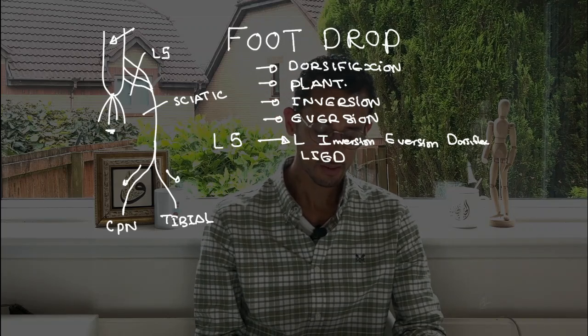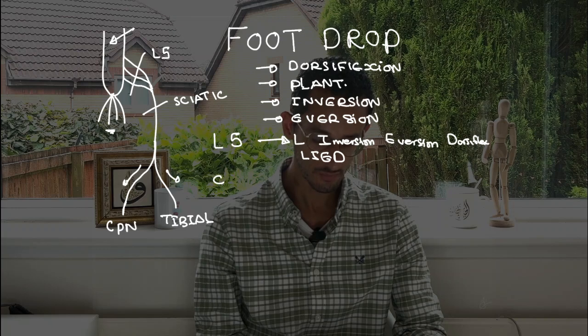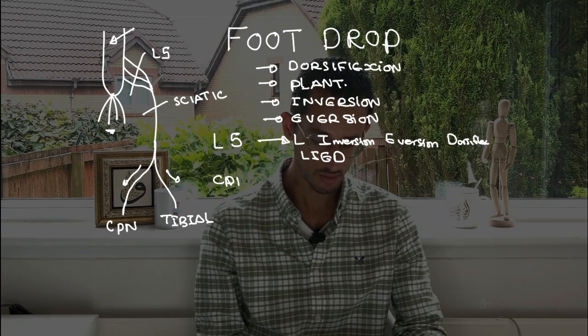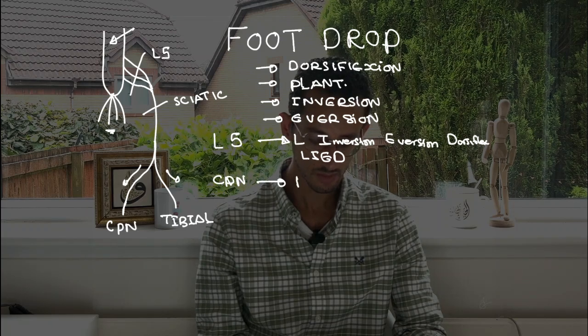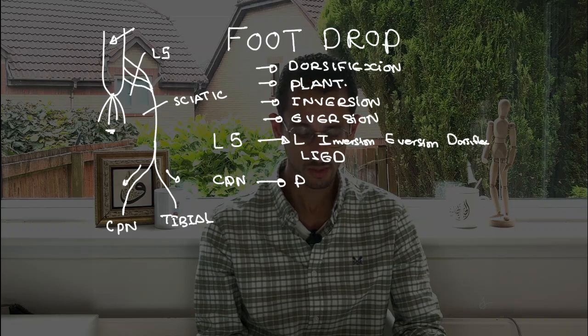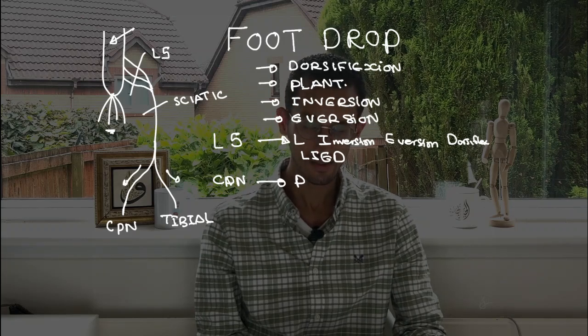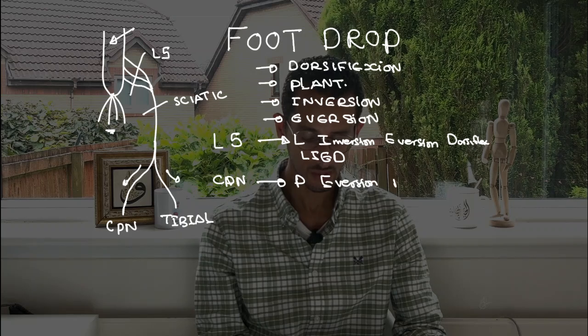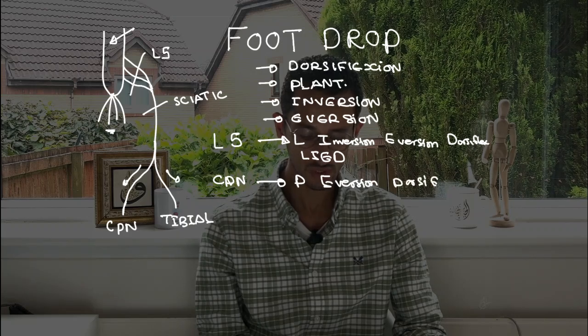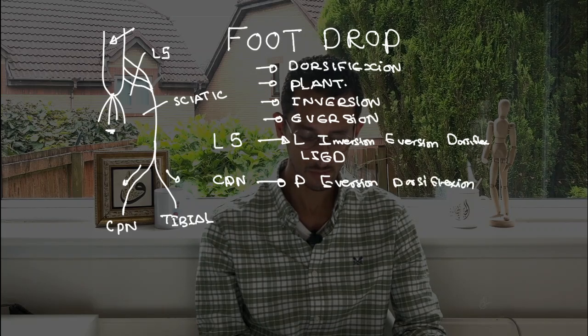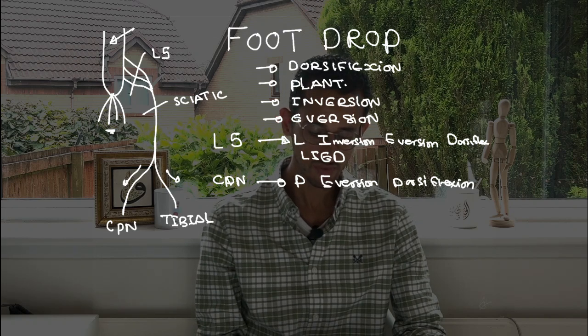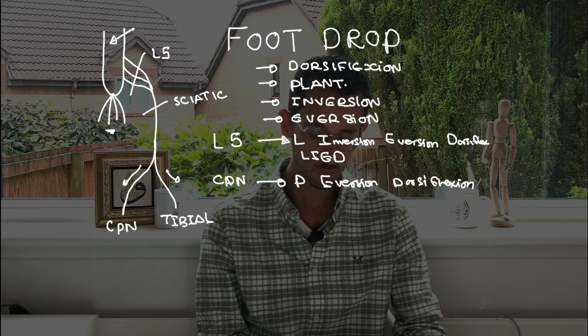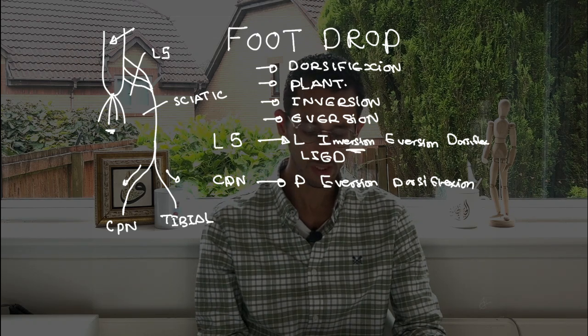If we think about the common peroneal nerve, so the common peroneal nerve, this would be P, peroneal nerve, so that would be PED. So that would be E which is eversion, and D which is the dorsiflexion.